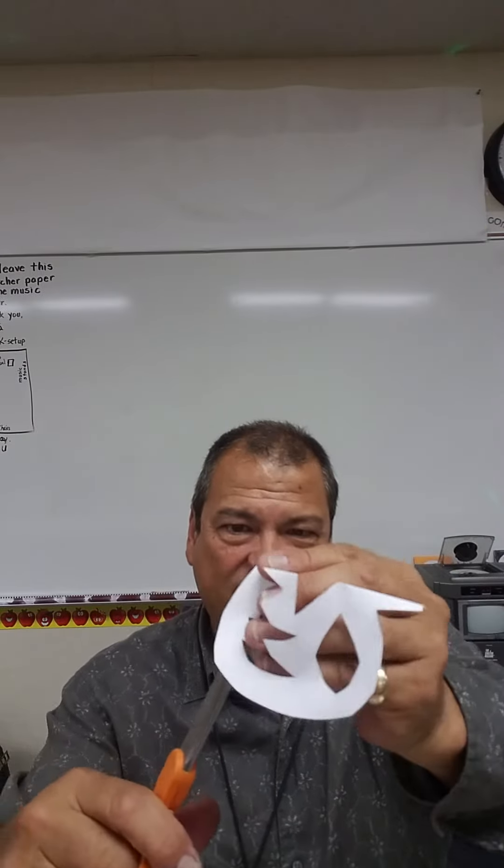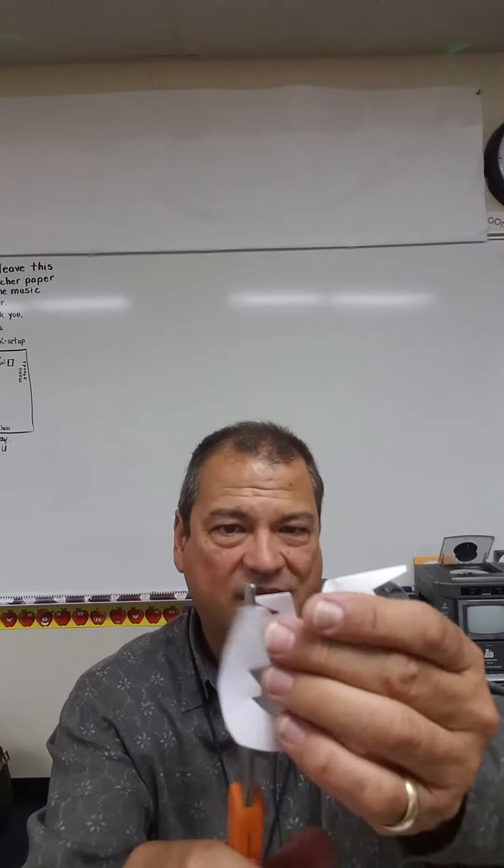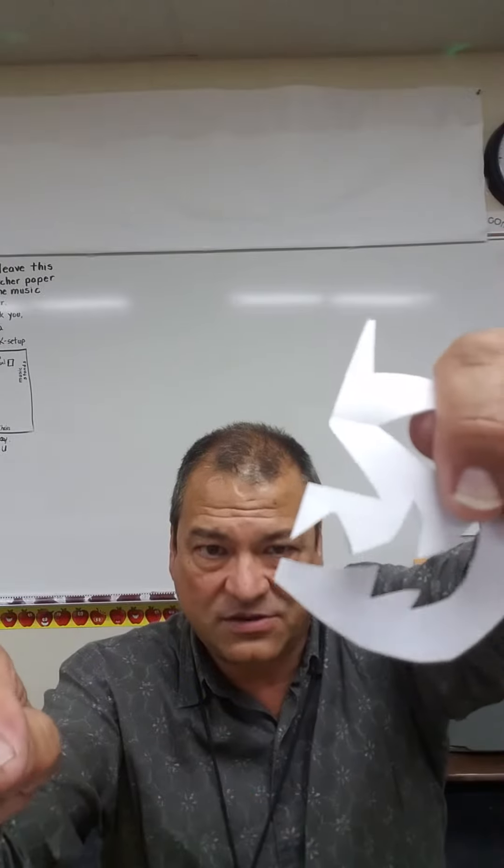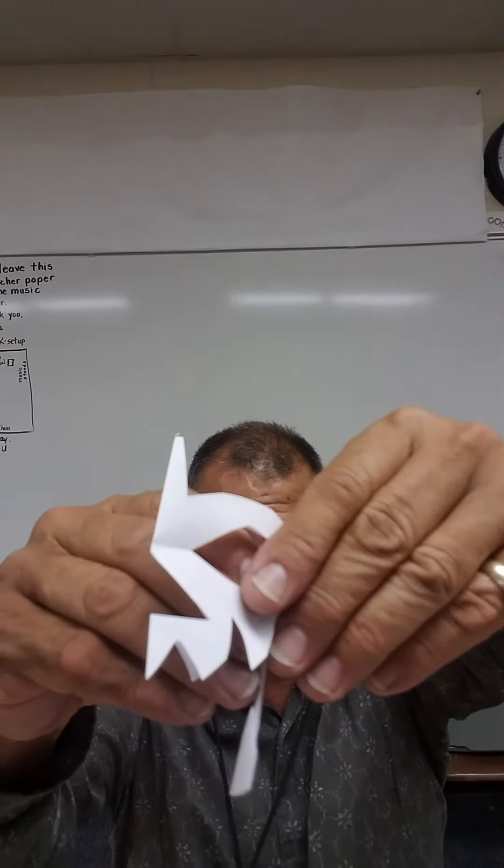So I make creepy teeth that almost look like flaming fire. And then you don't cut it all the way through. You've got to leave the crease for here, the nose, and then underneath the mouth. You see how the crease is there?